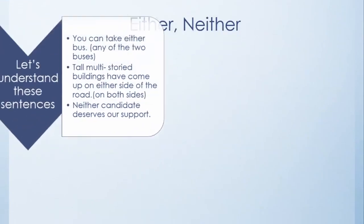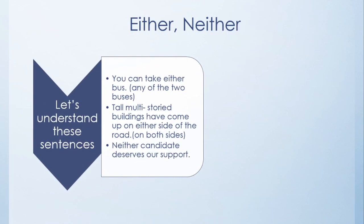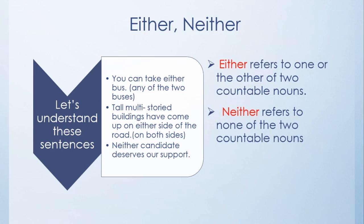Either and neither are distributives. 'You can take either bus.' 'Tall multi-storey buildings have come up on either side of the road.' In the first example, either means any one of the two — you have a choice. In the second, it means both sides. So either has two meanings: any of the two, or both. 'Neither candidate deserves our support' means not the one nor the other. Neither is the opposite of either.